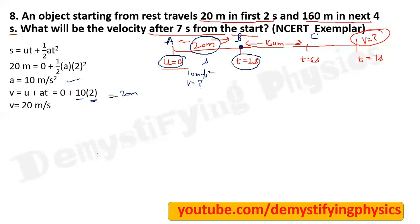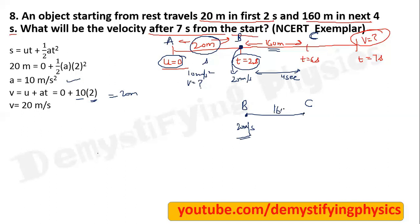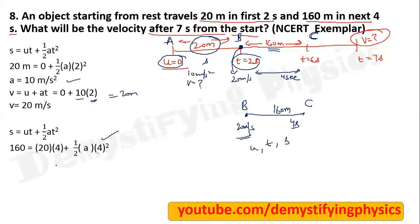Now for the BC portion: the final velocity at B was 20 meter per second, which becomes the initial velocity for the BC portion. We know distance is 160 meter and time is 4 seconds. Consider the BC portion separately — the body is moving with 20 meter per second at point B and travels 160 meter in 4 seconds. Use the second equation of motion to find acceleration, and we get acceleration equals 10 meter per second square. So acceleration for A to B and B to C is the same — acceleration has not changed.